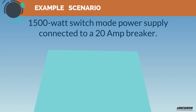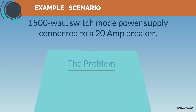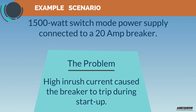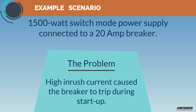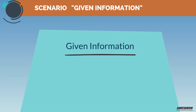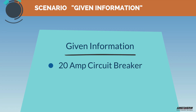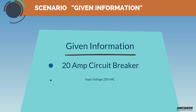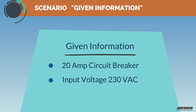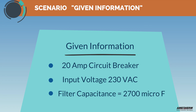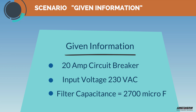In this scenario, our customer was using a 1500 watt switch mode power supply connected to a 20 amp breaker. The problem? High inrush current caused the breaker to continually trip during startup. The given information in this scenario is a 20 amp circuit breaker, 230 VAC input voltage, and filter capacitance of 2700 microfarads.